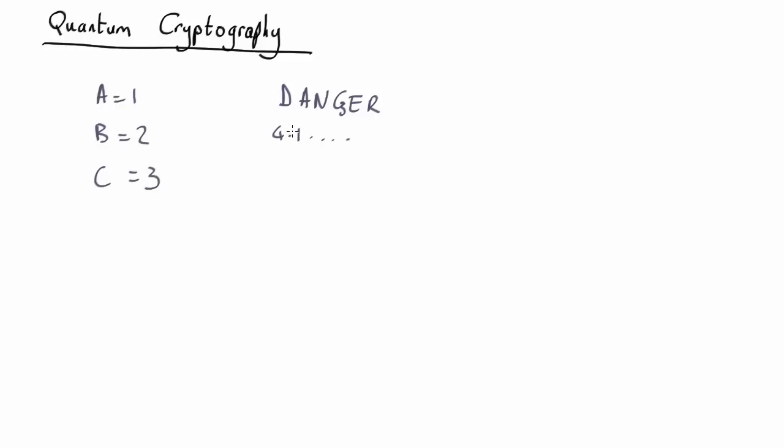Now these codes have been used since at least the time of Julius Caesar. They're very easy to encode, very easy to decode. The trouble is they are trivial to break, because there's always a one-to-one match between the letter and the code. So A is always 1, D is always 4. What that means is in your message there are going to be patterns. For example, the letter E is going to be much more common than the letter X, and so whatever number corresponds to E will be much more common than whichever one corresponds to X.